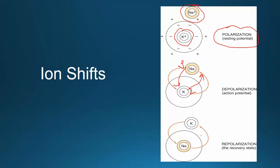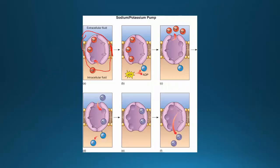Once depolarization has occurred, the cell must get back to its repolarized state. The repolarized state allows for potassium to be back in the cell, making it more negatively charged, and sodium will be outside the cell with a positive extracellular charge. The sodium-potassium pump, through activation by ATP, allows sodium in and potassium out and vice versa to return to the resting state.